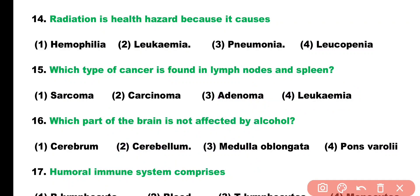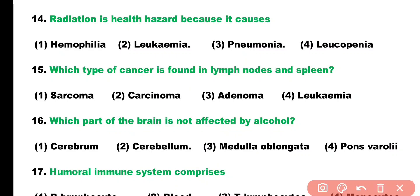Question number sixteen: which part of the brain is not affected by alcohol? Options: cerebrum, medulla oblongata, pons, cerebellum. Correct answer is option one — the functioning of the cerebrum is not significantly affected by alcohol.